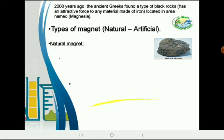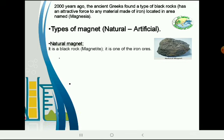The natural magnet is a black rock called magnetite, and it's one of the iron ores.